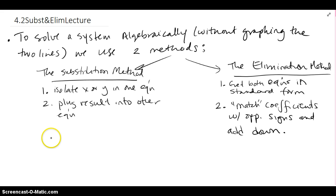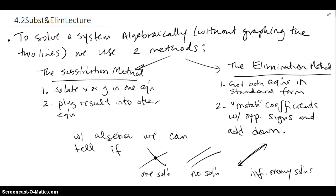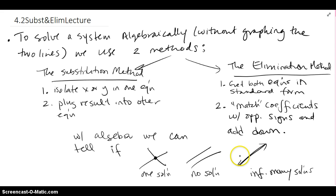The whole time we're doing this, we're trying to see which of the three types we're going to encounter. The three types are really whether there's going to be one solution, whether there's going to be no solution with two parallel lines, or there are going to be infinitely many solutions where the two lines overlap. Now with algebra, we'll be able to tell which of these three cases occur.